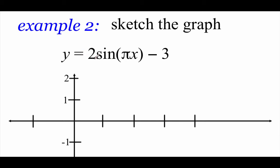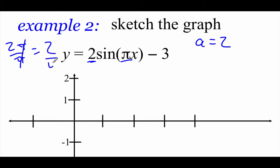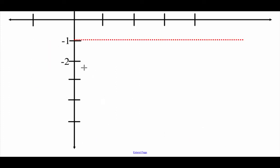One more example: 2 sine of πx minus 3. The a value is 2, so amplitude is 2. The b value is π, so the period is 2π over π — the π's cancel — giving a period of 2. Dividing by 4, our x spacing is 1/2. There's no c value, so no phase shift. The d value is negative 3, so we shift down 3. The maximum is normally 2 but shifted down 3 gives negative 1. The minimum is normally negative 2 but shifted down 3 gives negative 5.